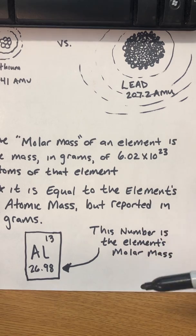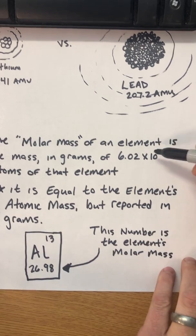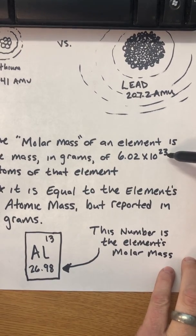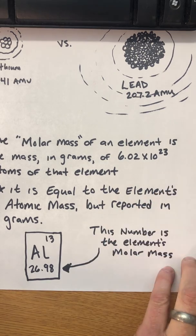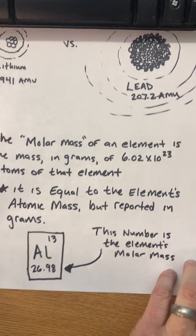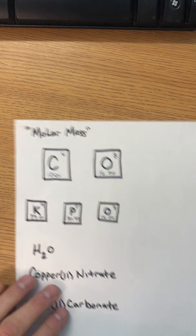That means that if you had Avogadro's number of atoms of aluminum, if we had that many atoms of aluminum, then on the scale, the scale would say 26.98 grams.